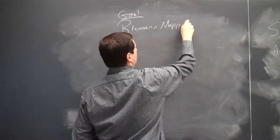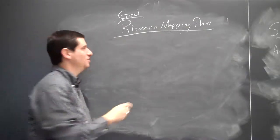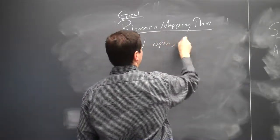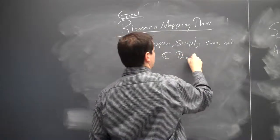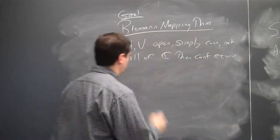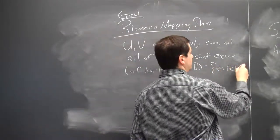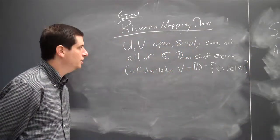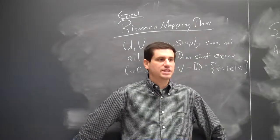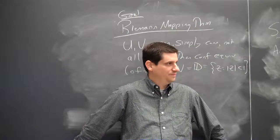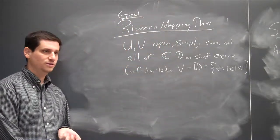So this is the goal — the Riemann mapping theorem. While we've been using Cauchy's name a lot more than Riemann's name, we're going to spend so much time on the Riemann mapping theorem that it will almost balance things out. The theorem states: U and V are open, simply connected, not all of C — then they're conformally equivalent. Often you take V to be D, the set of all z with absolute value of z less than one — the unit disc. The standard result is that everything open, simply connected, and not all of C is conformally equivalent to the unit disc.